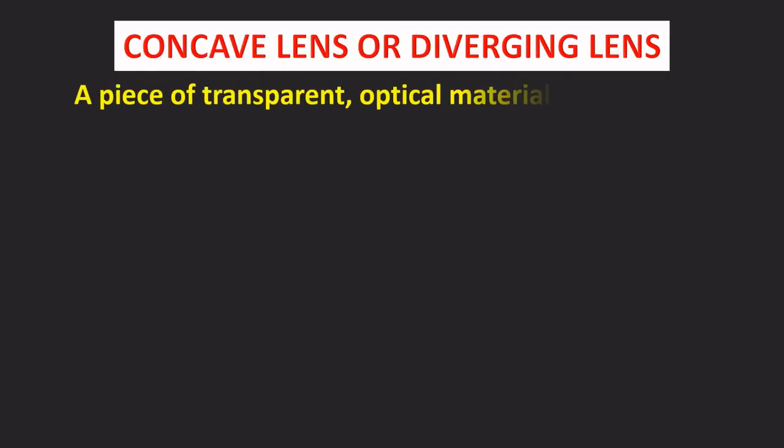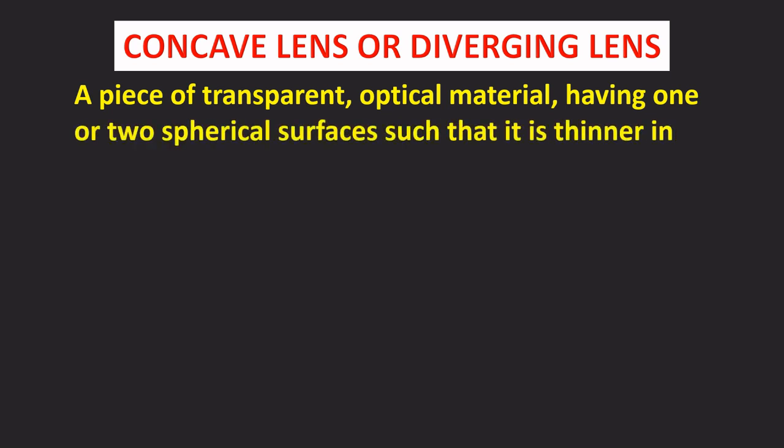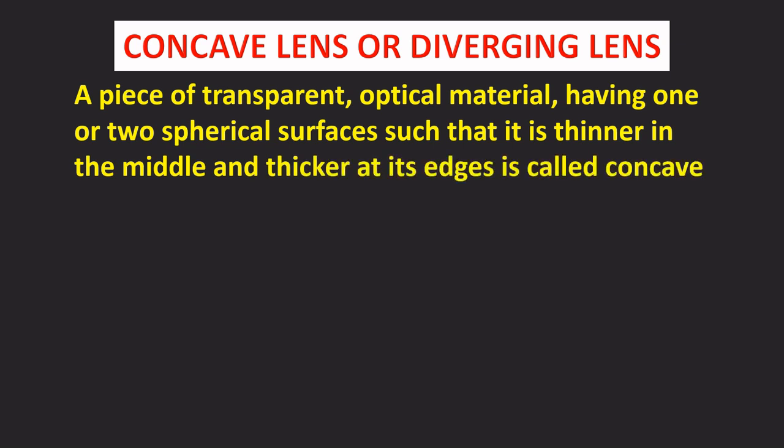Concave lens or diverging lens. A piece of transparent optical material having one or two spherical surfaces such that it is thinner in the middle and thicker at its edges is called concave lens or diverging lens.